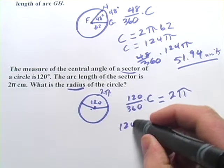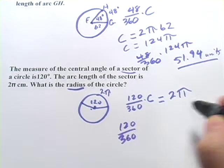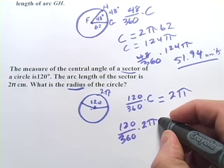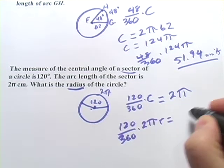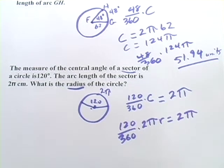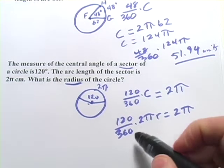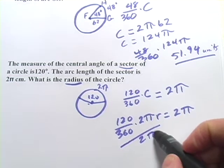We don't have a radius. We've got our 120 over 360. We know that the circumference is 2 times π times r, and then that equals 2π. So we've got something pretty complicated looking here, but it's not too bad really. Actually, the first thing I'd probably do is divide both sides by 2π.